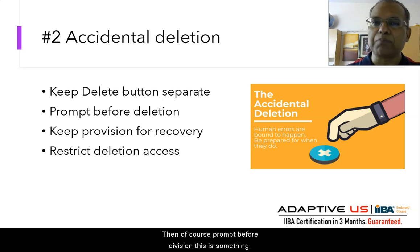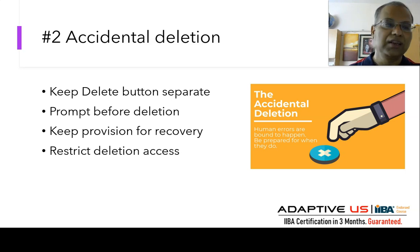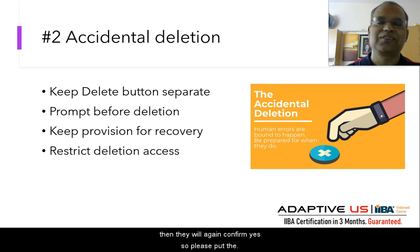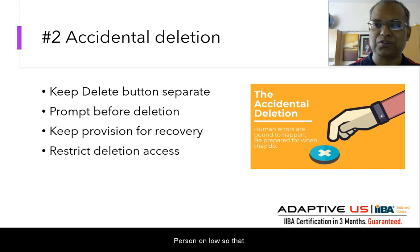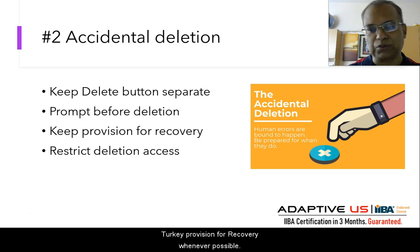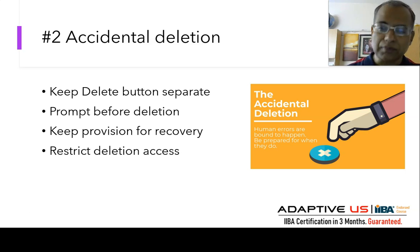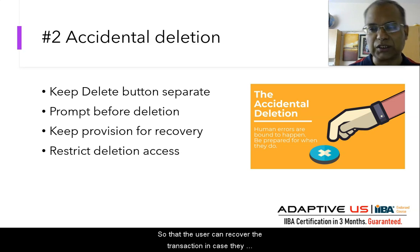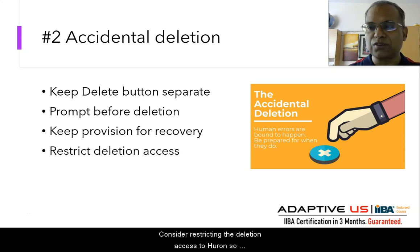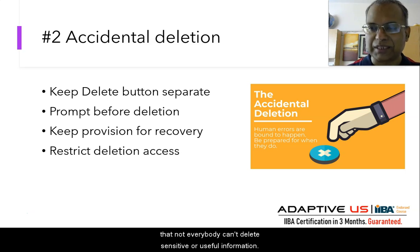Then of course, prompt before deletion — this is a must. Do not put the default cursor on 'yes' for confirm; put the cursor on 'no' so that users typically come out of the deletion option. Third, provide a recovery provision wherever possible so that the user can recover a transaction they accidentally deleted. Fourth, consider restricting deletion access to specific roles so that not everybody can delete sensitive or useful information.